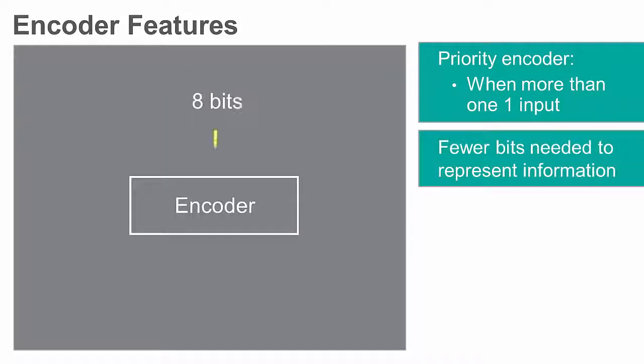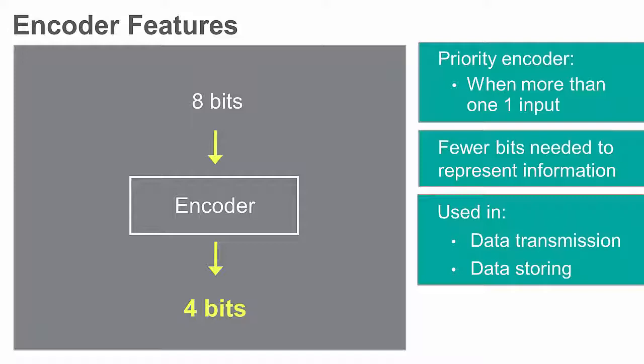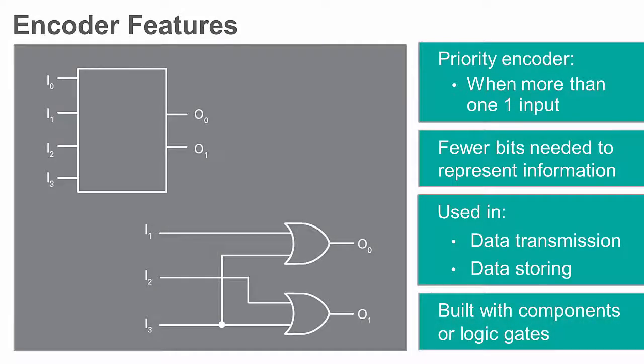Encoding is used for reducing the number of bits needed to represent information. For this reason, encoders are often used in applications of data transmission and data storing. In digital circuitry, decoders and encoders can be built with components or logic gates.